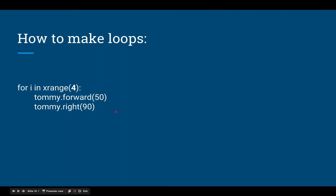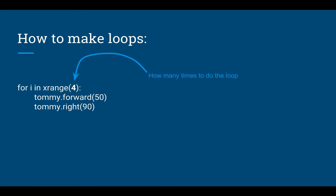How do you make a loop? It's simple. Inside of the range parentheses, you say how many times you want it to happen. You've got to have a colon, and then the next line must be indented. That indent tells the computer what actions you want to repeat.